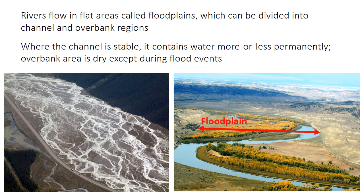Rivers flow through something called a floodplain, which is the flat area of the valley floor filled with sediments deposited by the river itself. The width of the floodplain is marked on the photo on the right, and on the left, the area between the two slopes with trees is the floodplain. The actual area where the water is flowing is called the channel. There could be more than one active channel, as in the left photo, or only a single channel, as on the right.